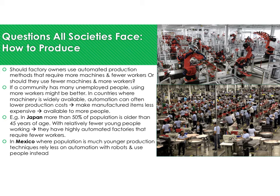The second question is how to produce. Should factory owners use automated production with more machines and fewer workers, or fewer machines and more workers? If a community has many unemployed people, using more workers might be better. In Japan, where more than half the population is older than 45, highly automated factories require fewer workers. In Mexico, with a much younger population, production relies less on automation and uses people instead.